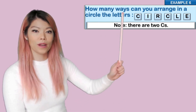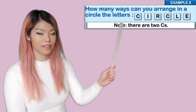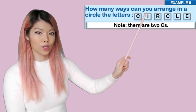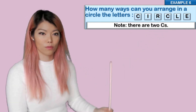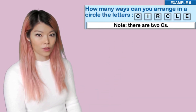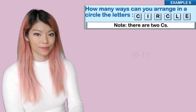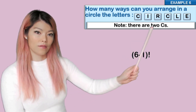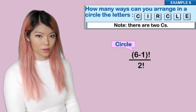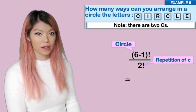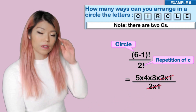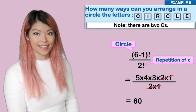Last example: how many ways can you arrange in a circle the letters of the word CIRCLE? We notice there are two C's, and there are six letters total. So six objects in a circle gives (6 − 1) factorial, and because we have two C's we divide by two factorial. That gives five factorial over two factorial, which simplifies to five times four times three, equalling 60.